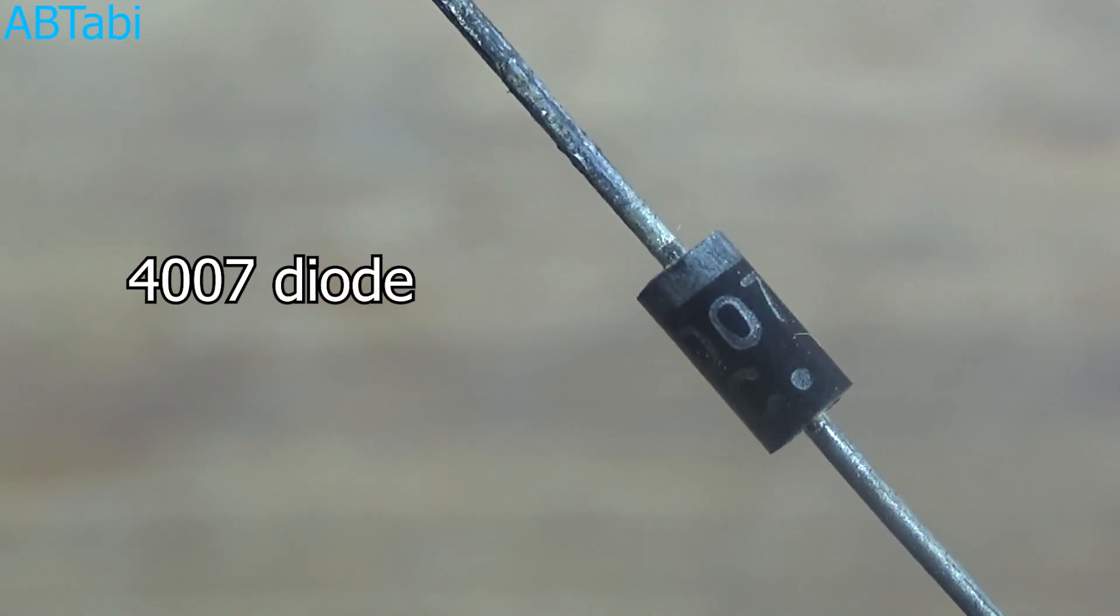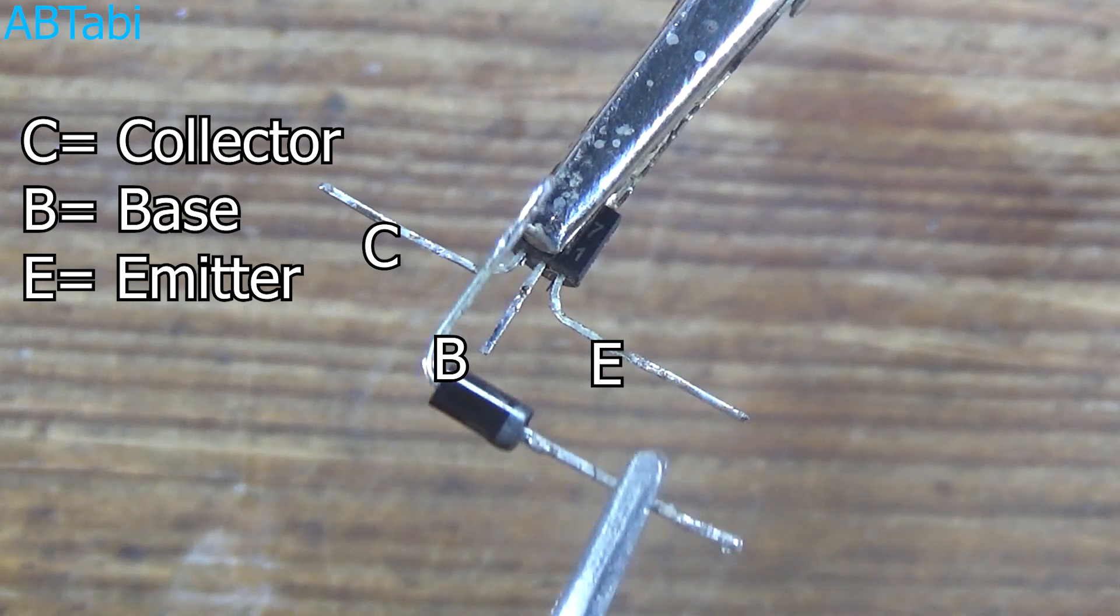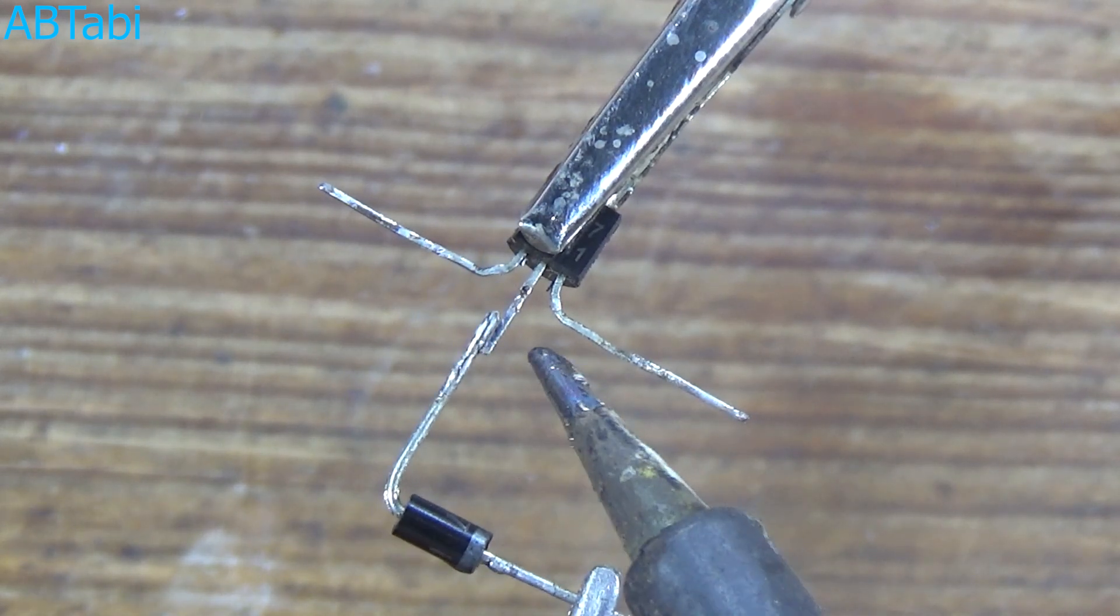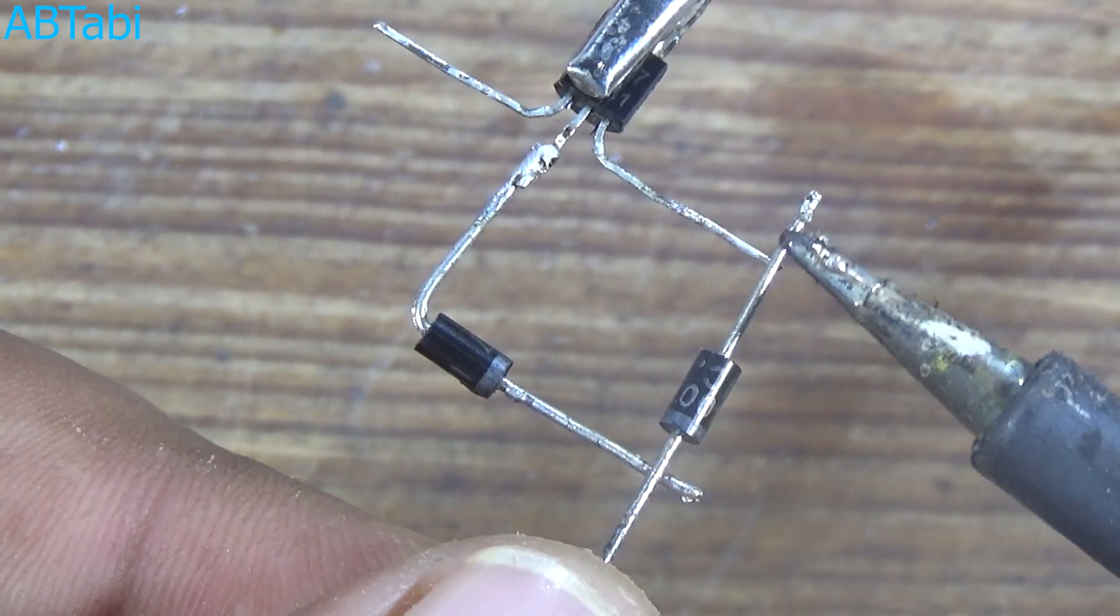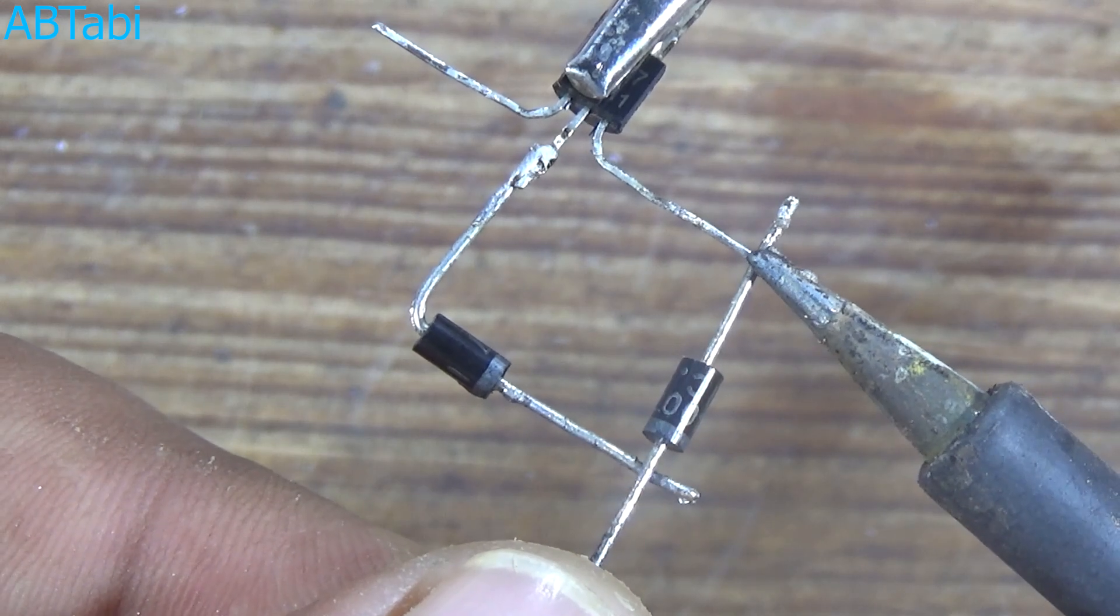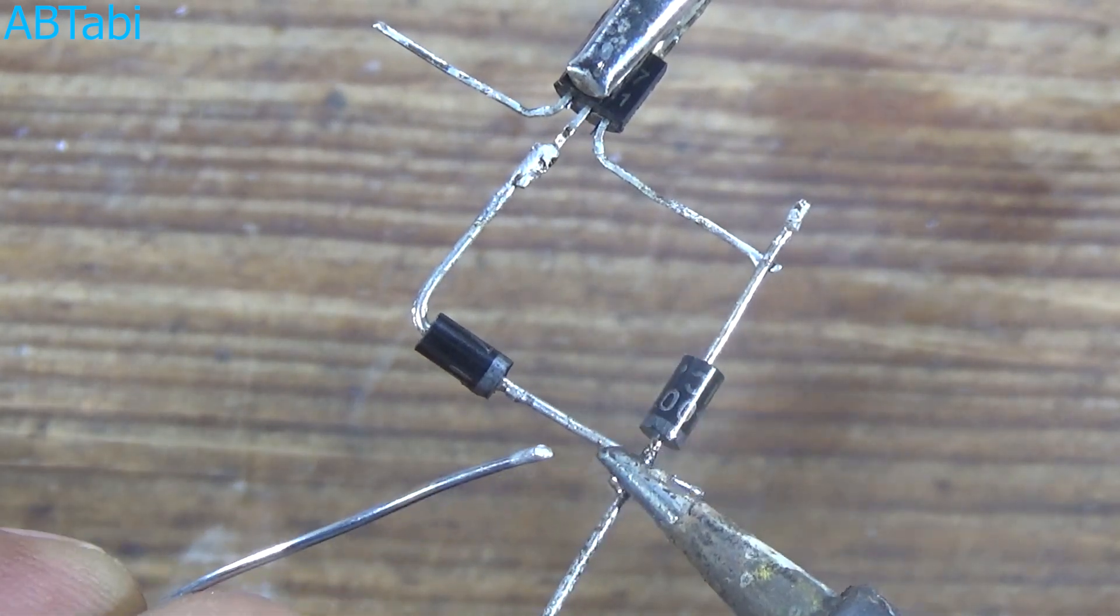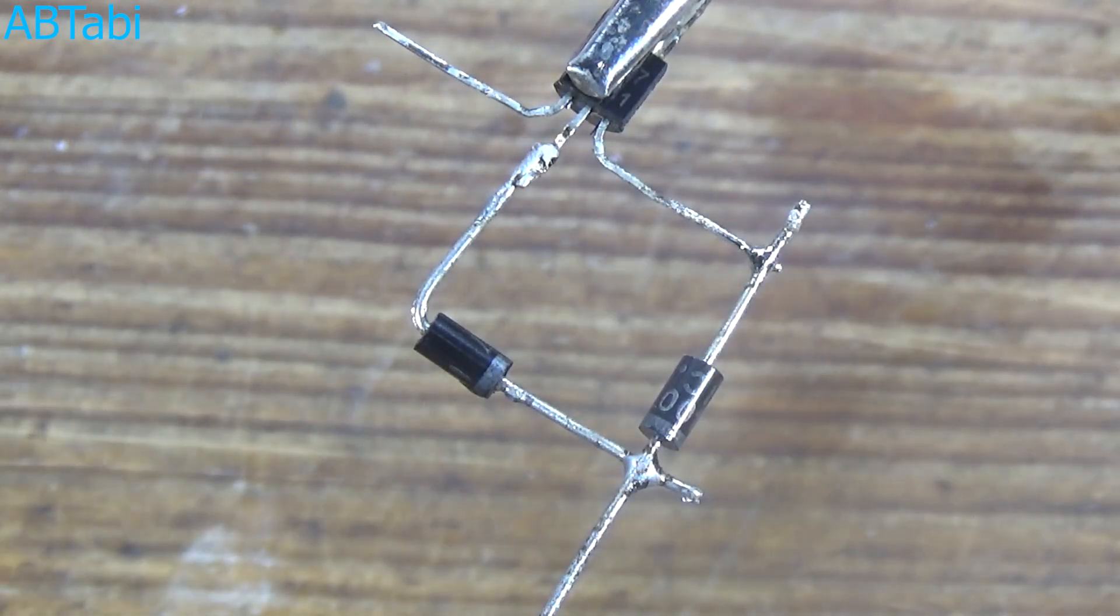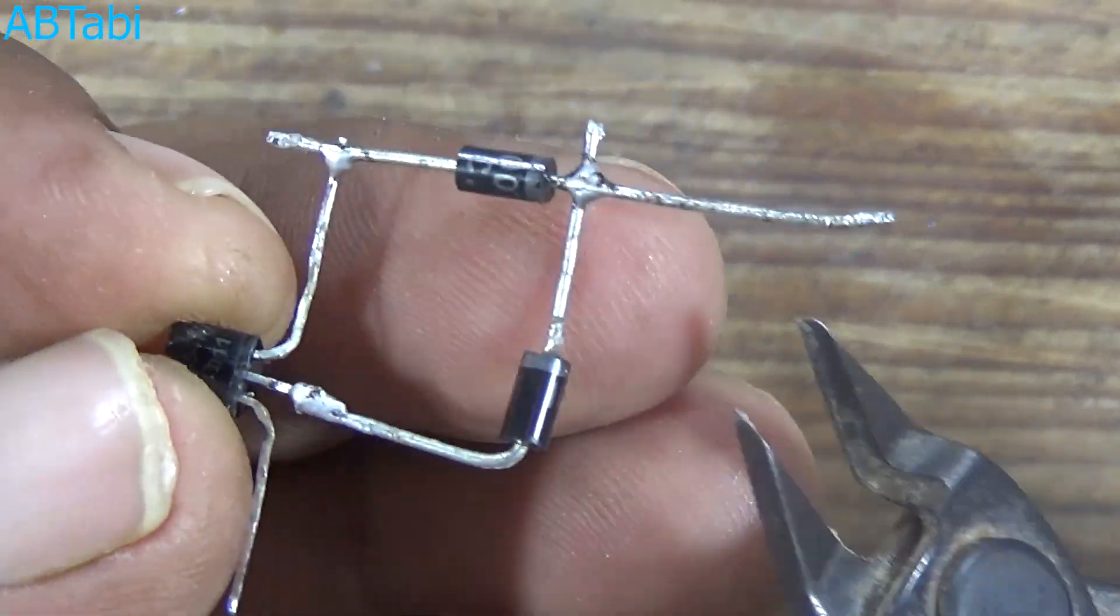4007 diode - you can use any other diode like 4148 diodes. Connect with the BC 547 transistor like this. Remember the diode anode and cathode pin, anode and cathode side connections. Watch the complete video till the end.